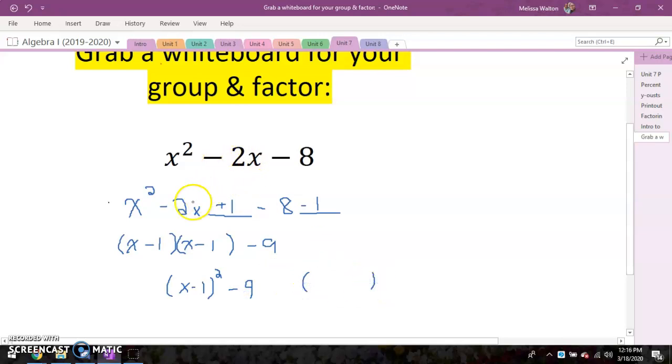So I cut negative two in half. Negative two cut in half is negative one and negative one. Negative one times negative one is positive one. Since I added one here, I had to subtract here. Negative eight minus one is negative nine. And then here is our vertex form.